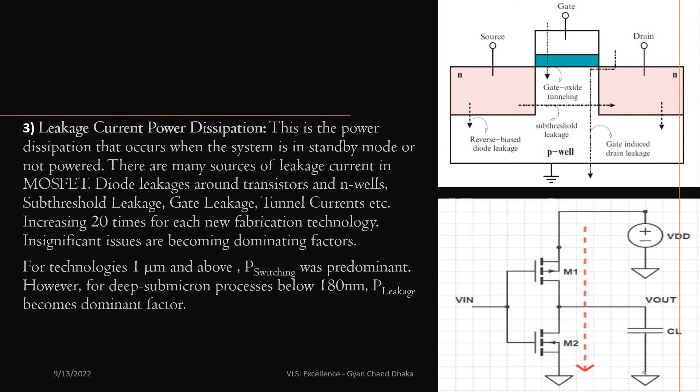There are many sources of leakage power dissipation. For example, if we see at the transistor level, there is reverse bias diode leakage.